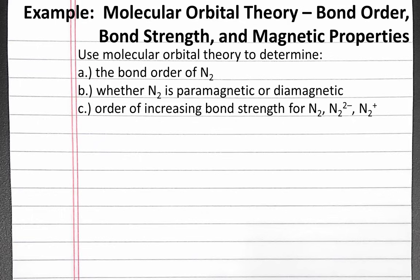The problem reads: use molecular orbital theory to determine (a) the bond order of N2, (b) whether N2 is paramagnetic or diamagnetic, and (c) the order of increasing bond strength for N2, N2²⁻, and N2⁺.